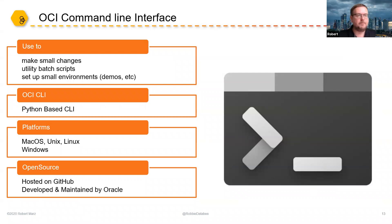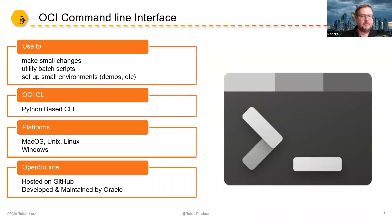Today we want to talk about the OCI command line interface. I personally use it to make small changes to my cloud environments, write utility batch scripts for stuff that has to be done frequently, and to set up small environments like demos. The OCI CLI is based on Python and is available for all major platforms - Mac OS, Unix, Linux, Windows. It is open source, hosted on GitHub, and developed and maintained by Oracle.